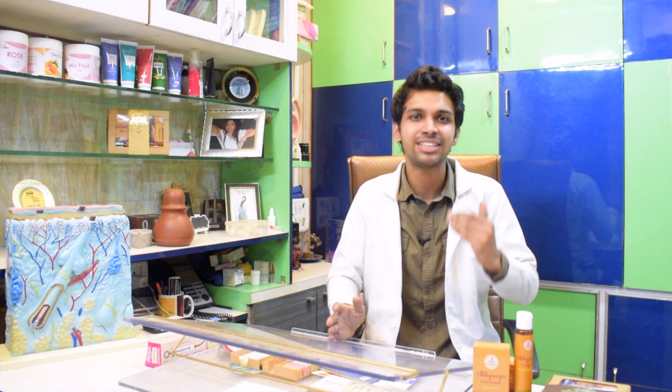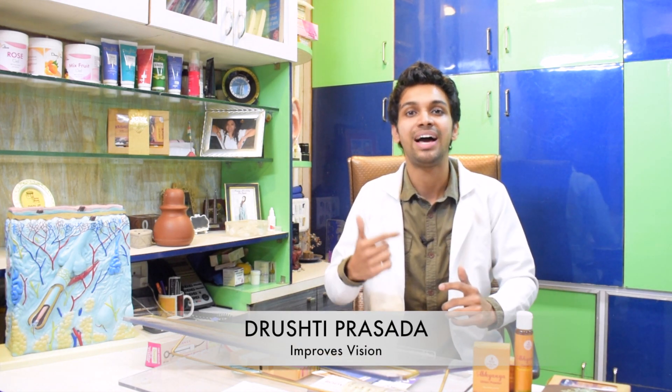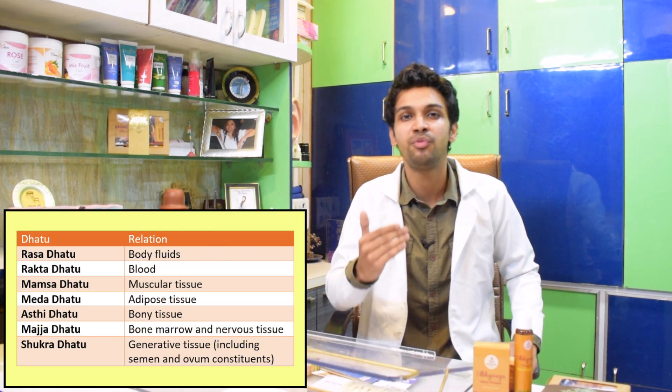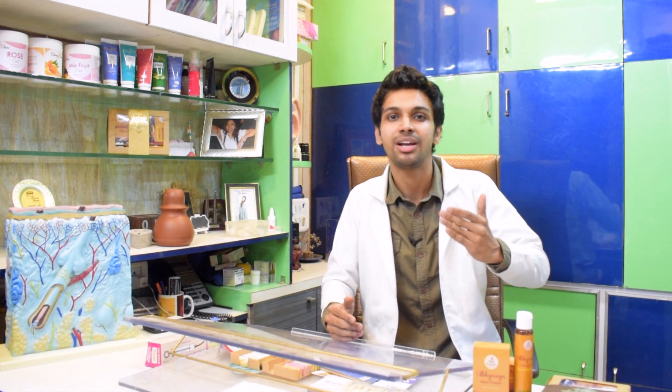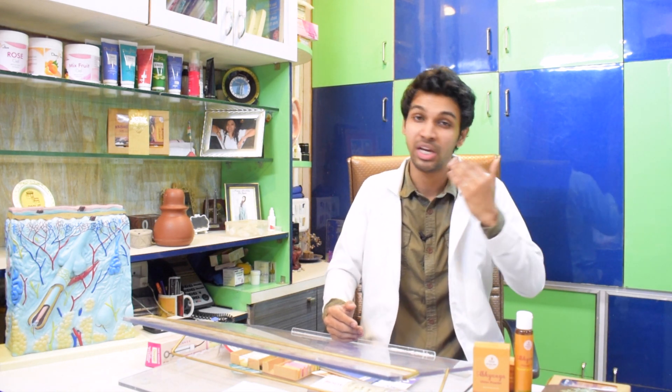Coming to the next line: drishti prasad means it improves eyesight. Pushti means it nourishes the body tissues. As you all know, there are seven tissues of our body known as sapta dhatu, beautifully explained as 'rasad raktam tato mamsa, mamsamedah prajayate, medho'sthi tato majja, majjashukrasya sambhavah.' This is how the successive dhatus get nourishment from the food we take. Pushti ayu — ayu means it prolongs lifespan.